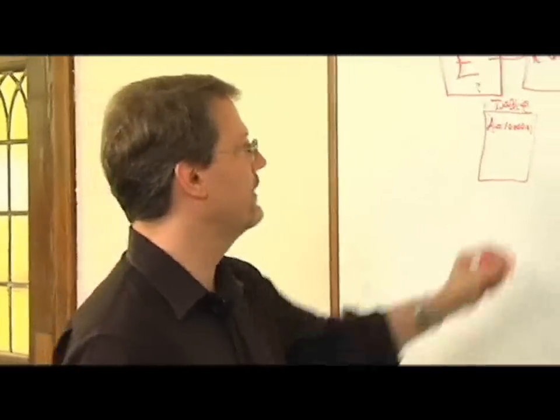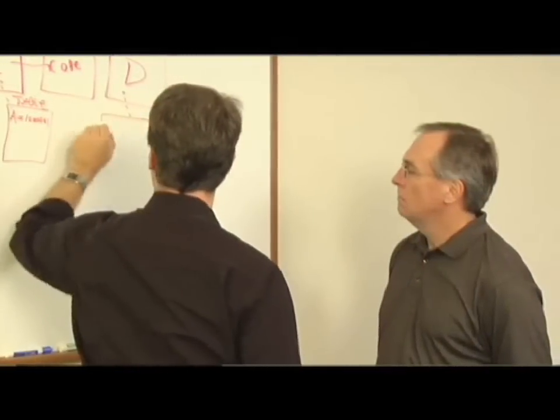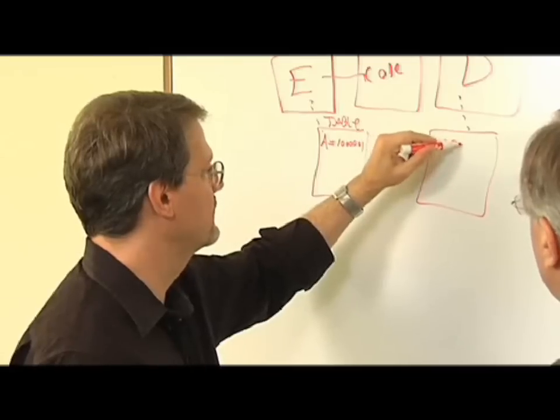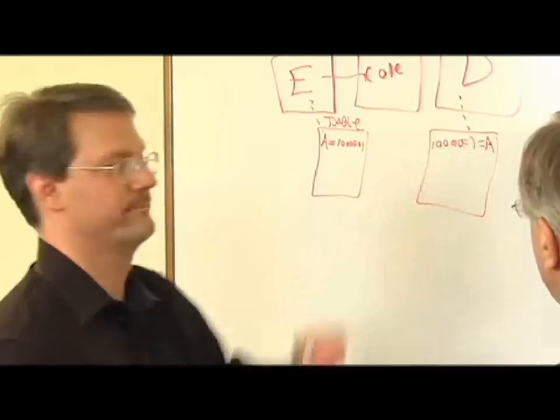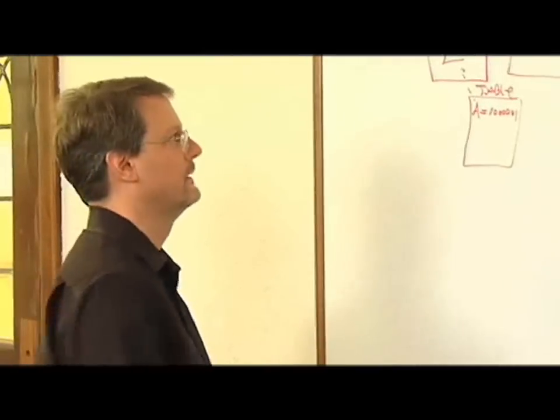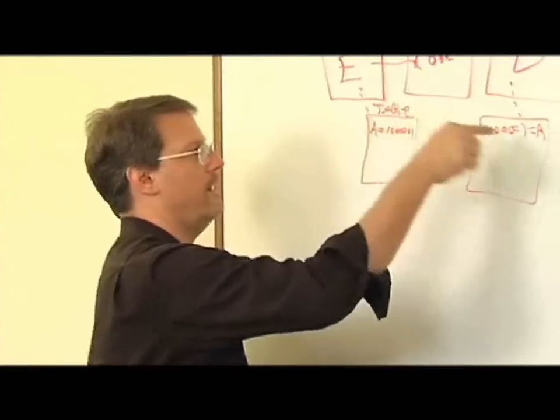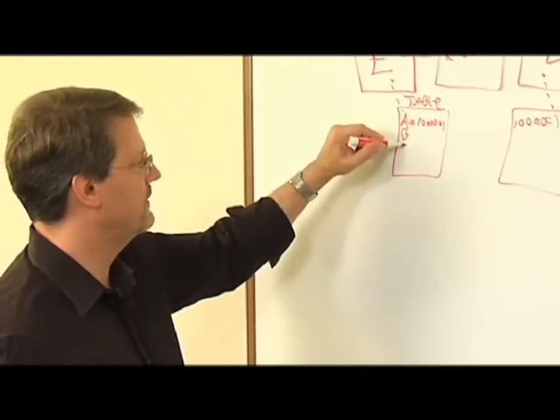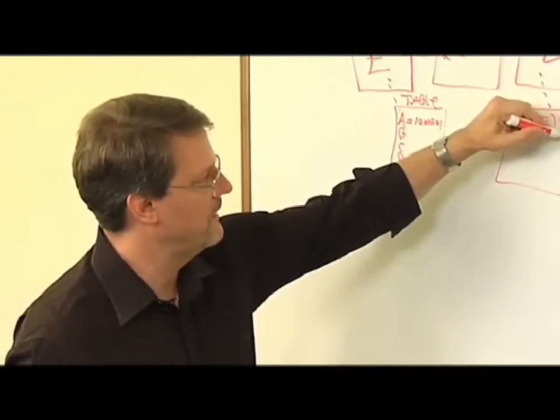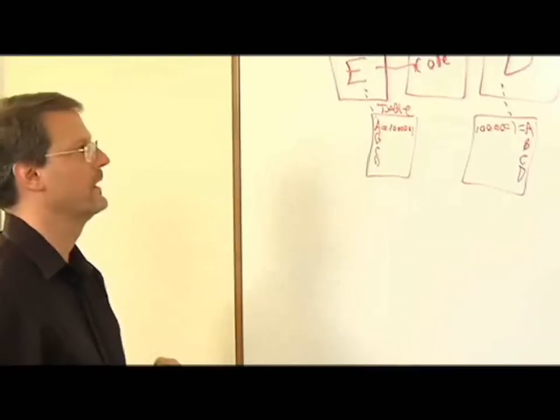Now, in your computer there's a decoding table. 1-0-0-0-0-0-1 equals A. Encode, decode. A, A. With 1-0-0-1 in the middle. And B, C, D equals B, C, D.